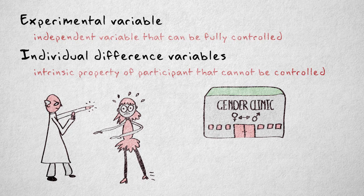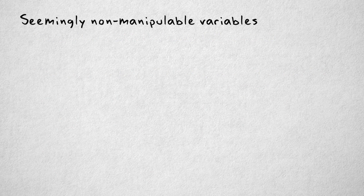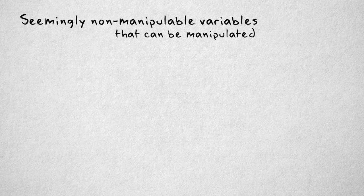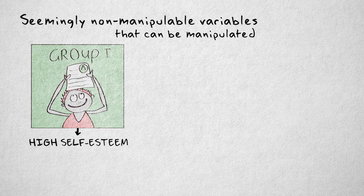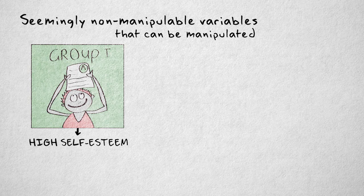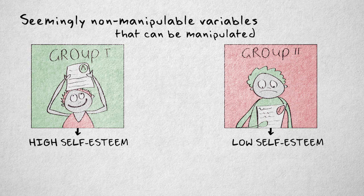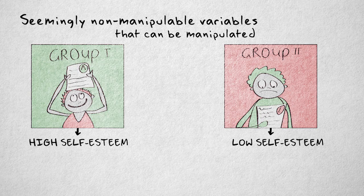However, some variables that seem like non-manipulable individual differences variables can be manipulated. For example, a variable like self-esteem could be manipulated by giving participants a bogus intelligence test. In one condition, participants are told they scored extremely high, thereby boosting self-esteem. In another condition, participants are told they scored far below average, decreasing their self-esteem. We can now investigate the effect of high or low self-esteem on a subsequent math test, for example.